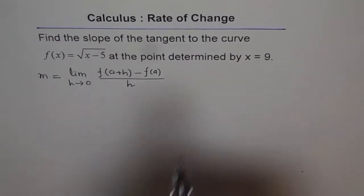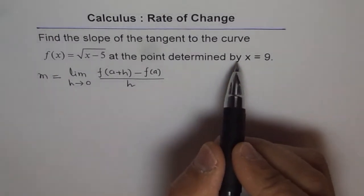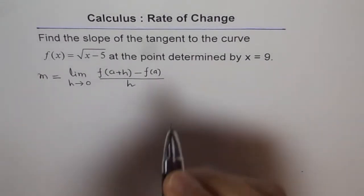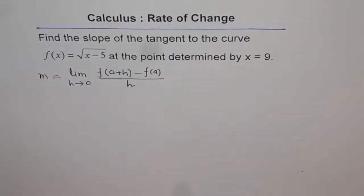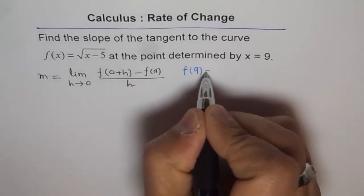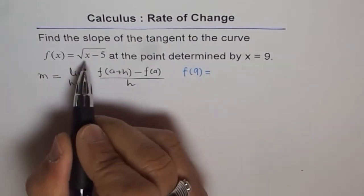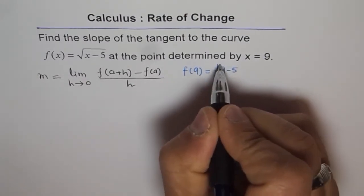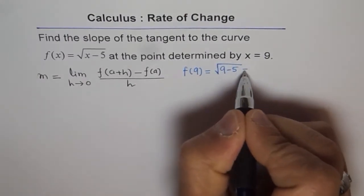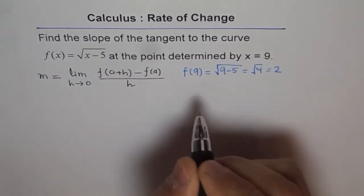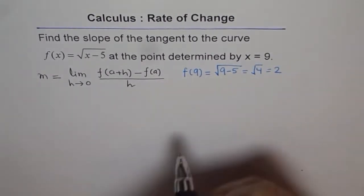Here we know the point is x = 9, so let's find f(a), which means we need to find f(9). So f(9) = √(9 − 5) = √4 = 2. So f(9) is 2.